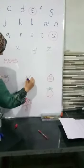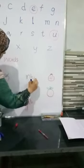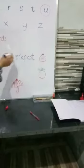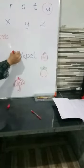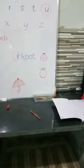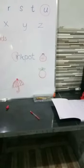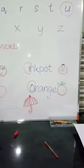Now look at here. What is this? This is inkpot, so we write here i-n-k-p-o-t, inkpot. Students, look at here, I is also a vowel letter. Now look at here, o-r-a-n-g-e, orange, students.